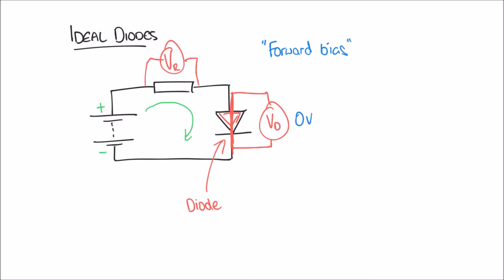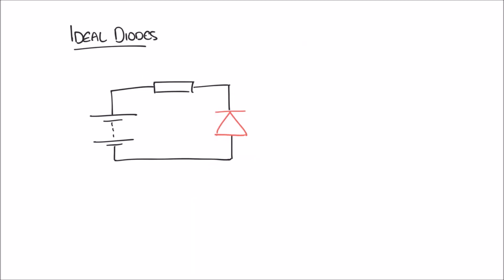That voltmeter across the diode would give us zero volts. Thinking back to Kirchhoff's Voltage Law — the sum of the voltage supplied must equal the sum of the voltages dropped — if we have a 9 volt battery, we would expect to measure all nine volts across the resistor, since none of it is dropped across the ideal forward-biased diode.